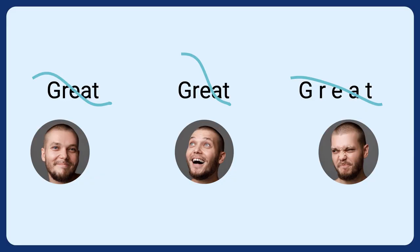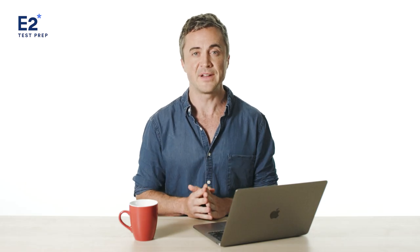Another way that we use intonation is to express emotion. Here we have three ways of saying 'great' with different intonation. The first 'great' is neutral. The second 'great' is really happy. And the third 'great' actually expresses sarcasm. That gives you a bit of an idea of how intonation works in English and how it might work in your OET speaking roleplay. I recommend paying attention to the way it's used, especially in clinical settings, because it can really help to make what you're saying more meaningful and clearer.